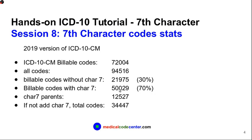Those 50,000 codes with a 7th character are derived from around 12,000 ICD-10 CM codes. In other words, if we don't add the 7th character, the total number of billable codes would be around 34,000 — but we actually have 72,000 billable ICD-10 CM codes because of the 7th character. So it's really important to understand the 7th character.